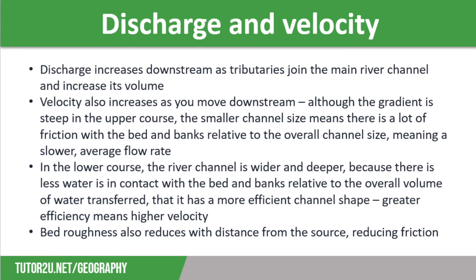Discharge increases downstream as tributaries join the main river and increase its volume. Velocity also increases as you move downstream. Although the gradient is steep in the upper course, the small channel size means there is a lot of friction with the bed and banks relative to the overall channel size, meaning a slower average flow rate. In the lower course the channel is wider and deeper, with less water in contact with the beds and banks relative to the overall volume of water transferred, giving it a more efficient channel shape. Greater efficiency means higher velocity, and bed roughness also reduces with distance from the source, which further reduces friction.